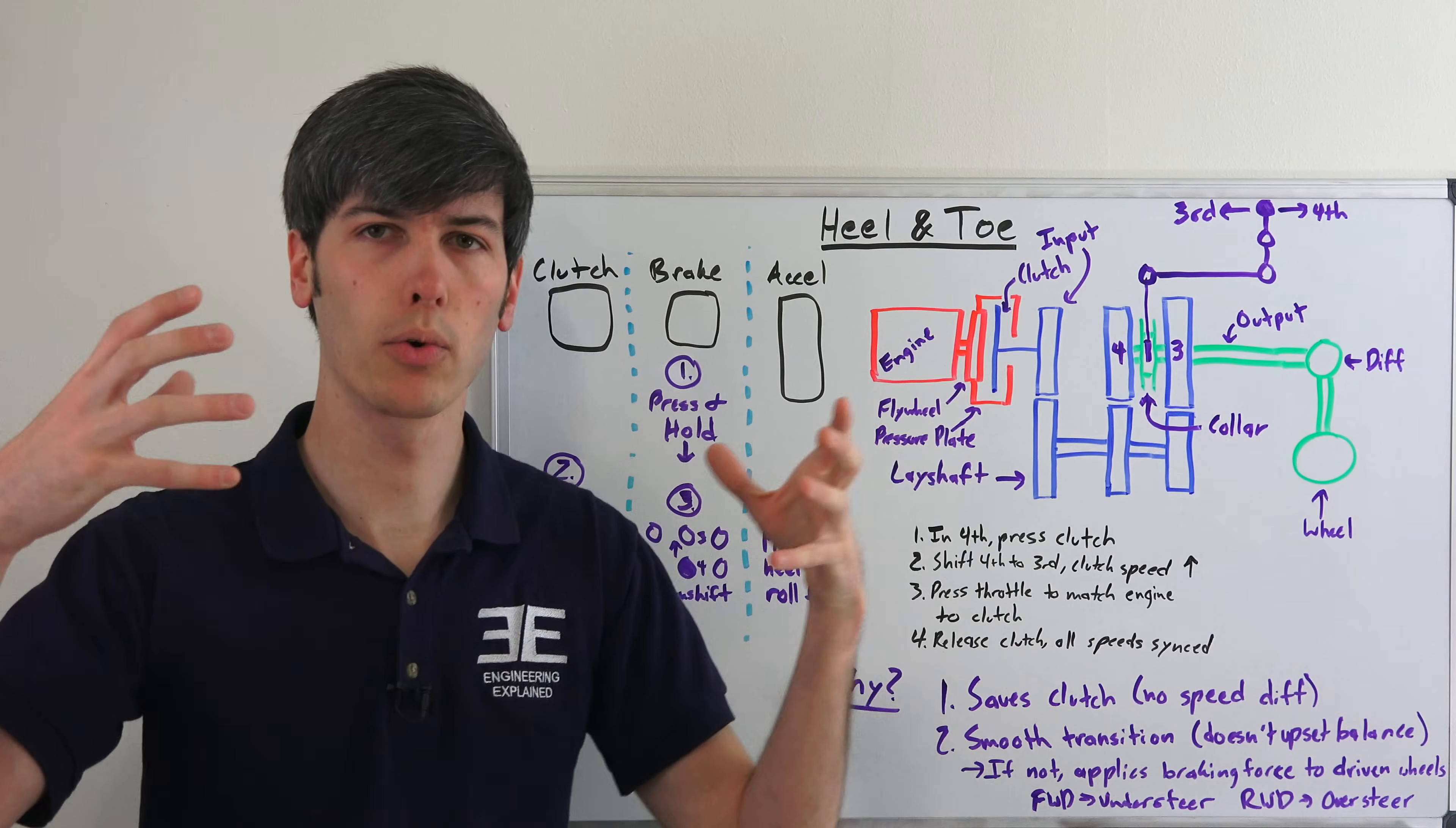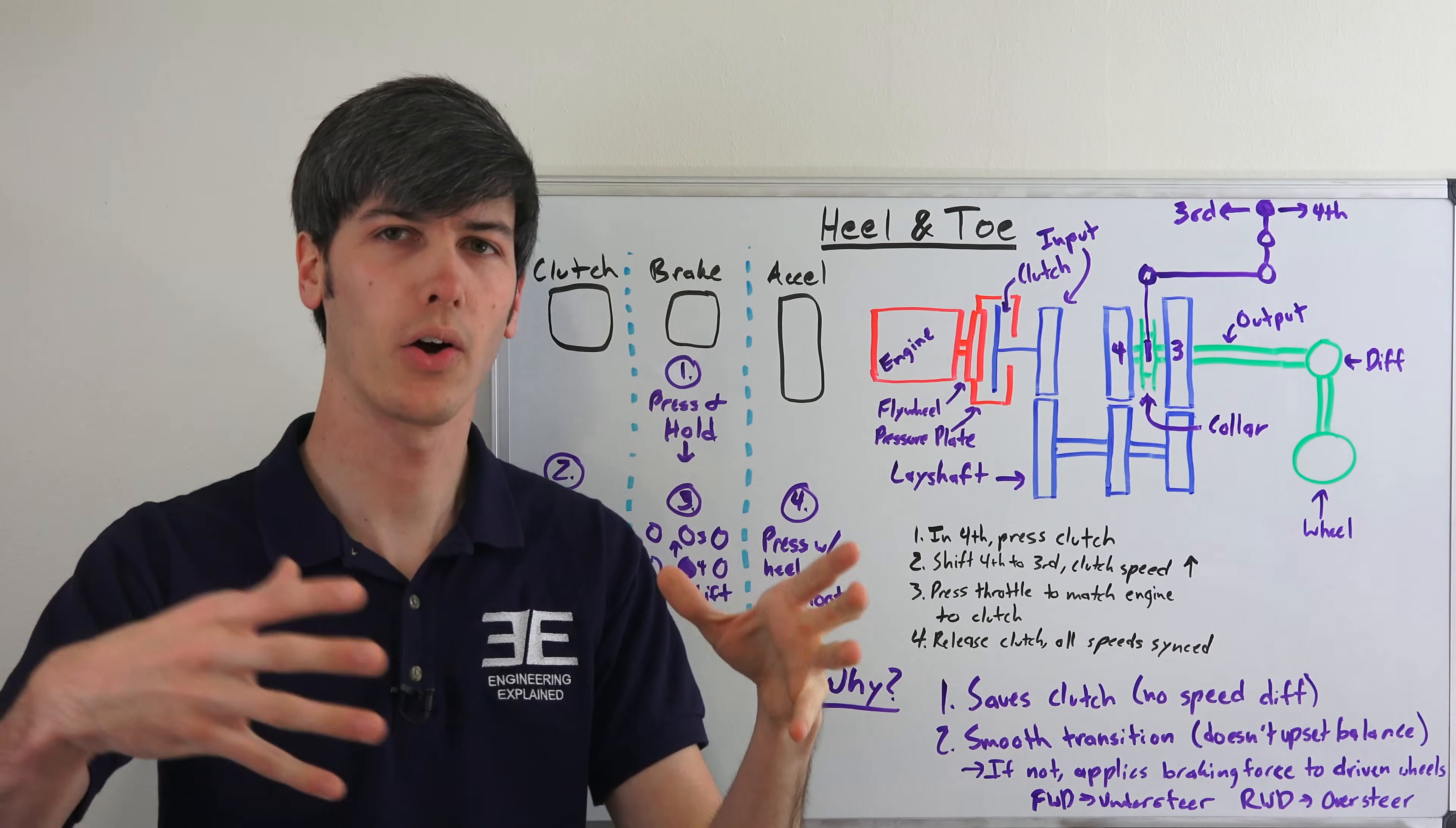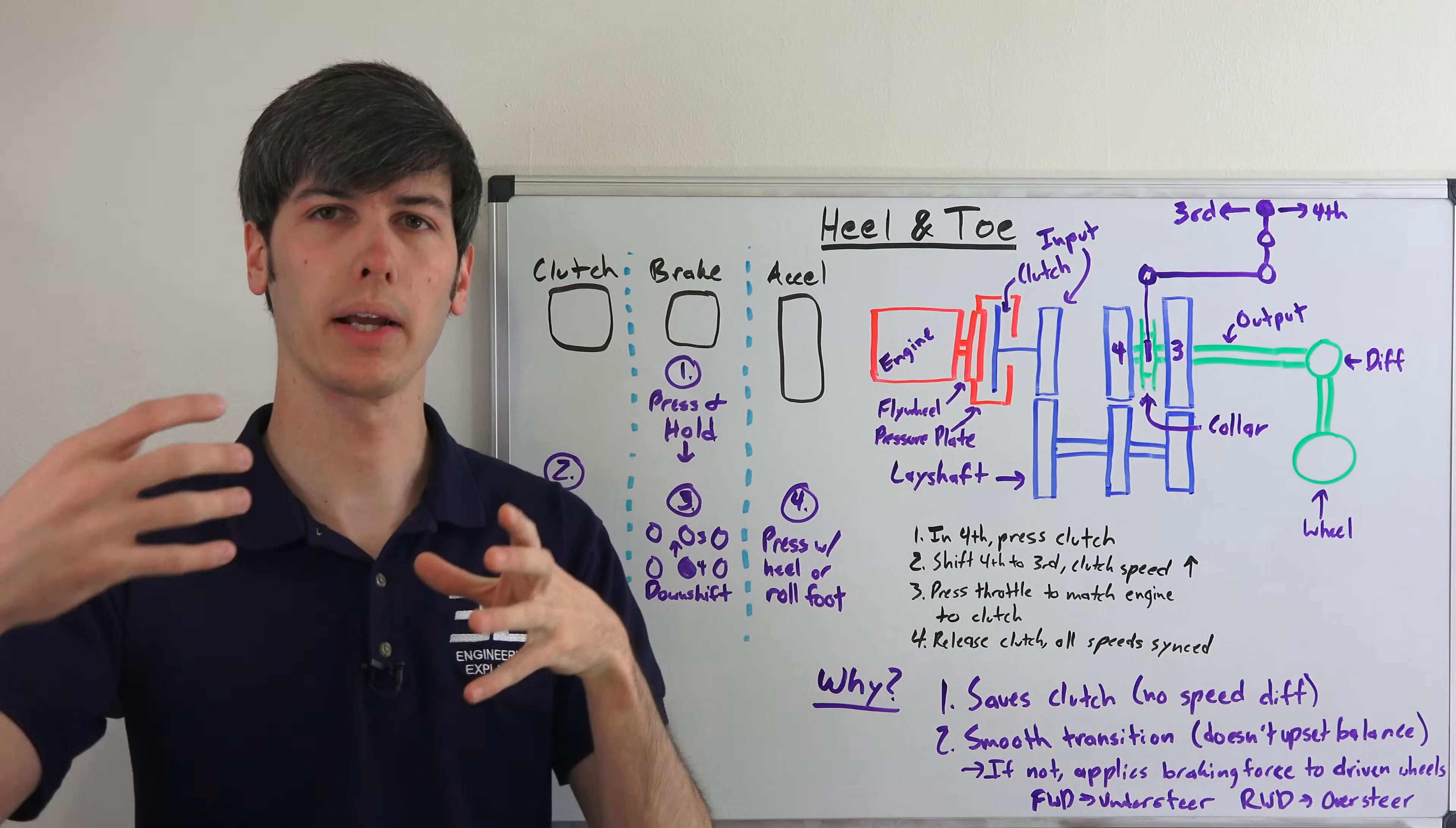you're going to be applying a braking force to all four of your wheels if you don't match the throttle, the engine speed to the clutch speed. And so by passing that braking force to all your wheels, you're going to be more likely for that car to slide or it could understeer or oversteer depending on where most of that braking force is applied.